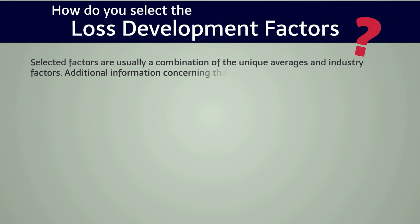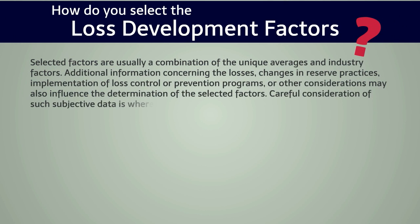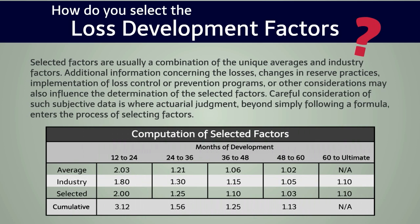Selected factors are usually a combination of the unique factors. Additional information concerning the losses, changes in reserve practices, implementation of loss control or prevention programs, or other considerations may also influence the determination of the selected factors. Careful consideration of such subjective data is where actuarial judgment — beyond simply following a formula — enters the process for selecting factors.